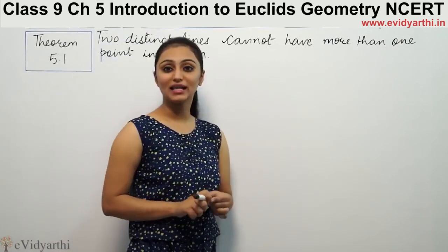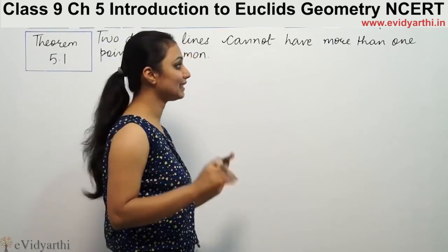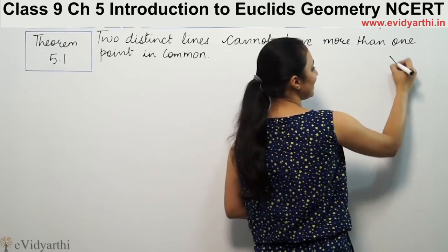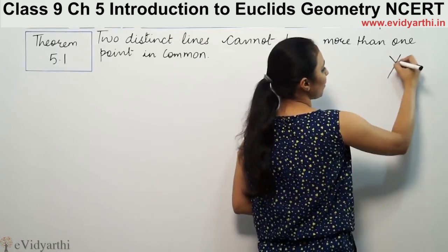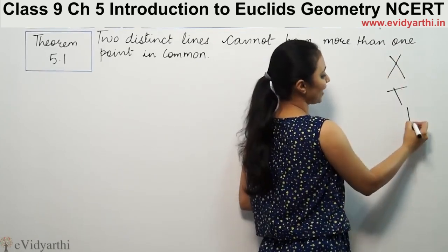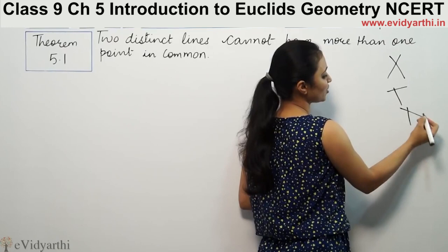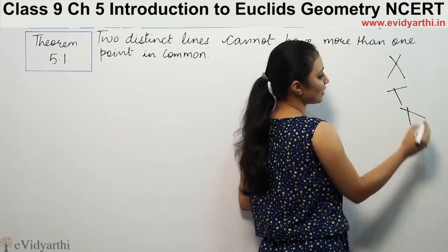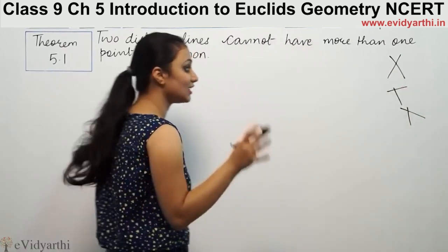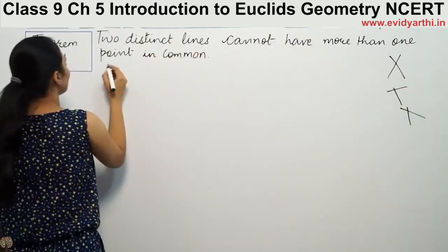Now we prove that two distinct lines — two different lines — can have only one common point. Lines can be drawn in various orientations, but common points can only be one. We prove that.